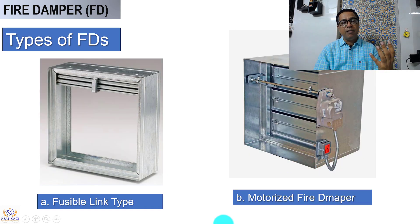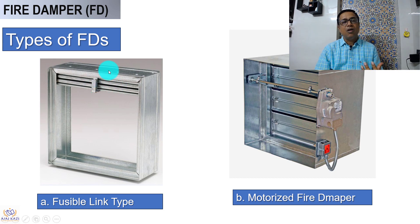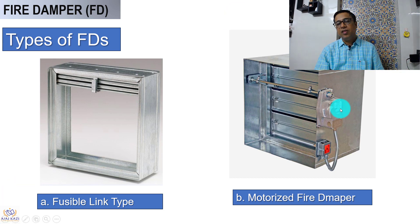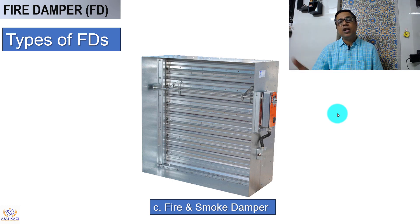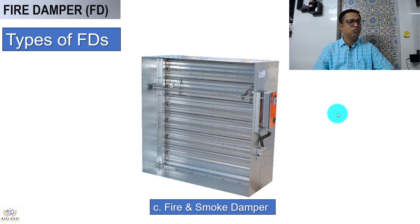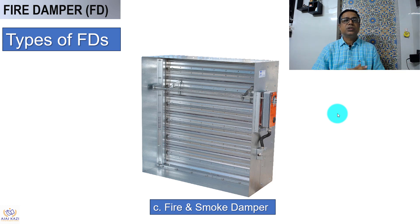There are types of fire dampers. The first is the fusible link fire damper — specifically a curtain-type fusible link fire damper. In case of fire, the link collapses and the curtain drops down, preventing fire from passing through. Another type is the motorized fire damper, which has a motor that receives a fire signal from the zone and closes accordingly. There is also a fire and smoke damper with a dual actuator that also senses smoke, preventing smoke from passing from one side to the other.